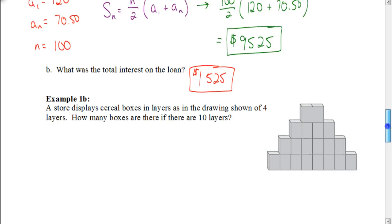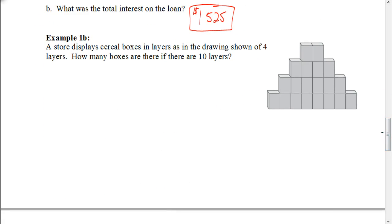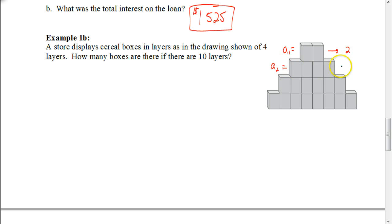There is a follow-up question: what was the total interest on the loan? If you subtract what was originally borrowed — eight thousand dollars — from the total paid, you find nine thousand five hundred twenty-five minus eight thousand equals one thousand five hundred twenty-five dollars in interest. For the next example, a store displays cereal boxes in layers. With four layers shown in the drawing, how many boxes are there if there are ten layers? We're not finding how many are in just the tenth row, but how many total boxes there would be.